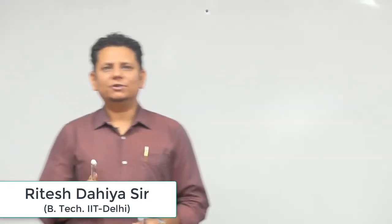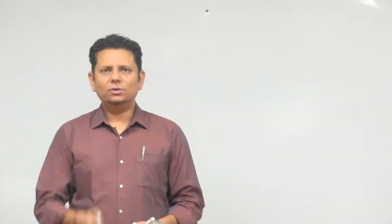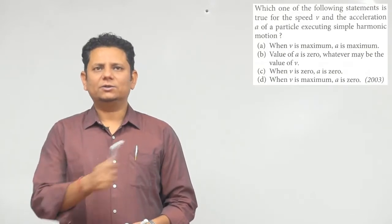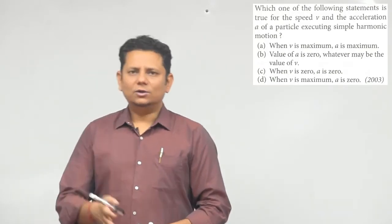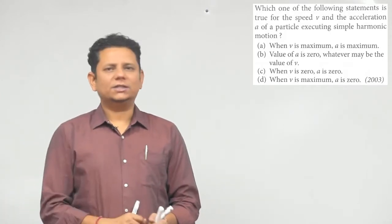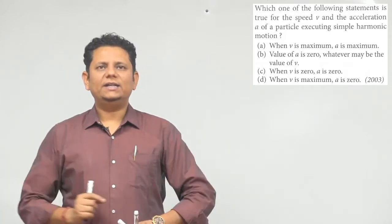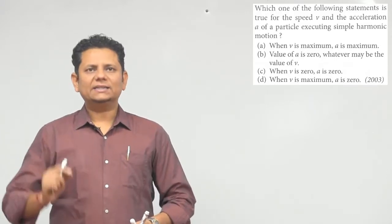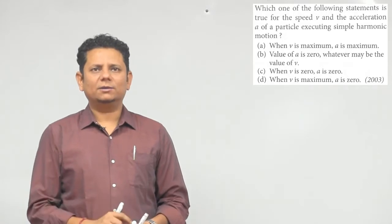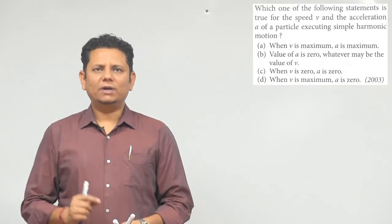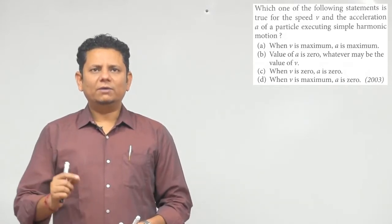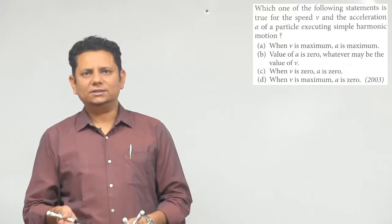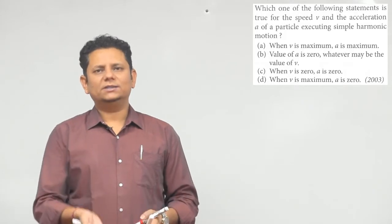Next question: which one of the following statements is true for the speed V and acceleration A of a particle executing simple harmonic motion? हमें 4 statements में से बताना है कौन सा true है. पहला statement है when V is maximum, A is maximum. दूसरा statement है value of A is 0 whatever may be the value of V. तीसरा option है when V is 0, A is 0. चौथा है when V is maximum, A is 0.